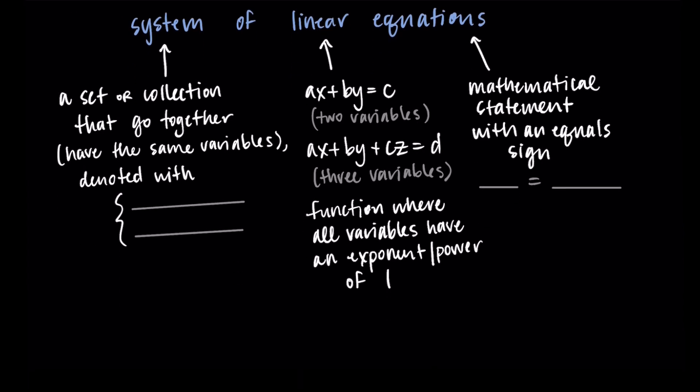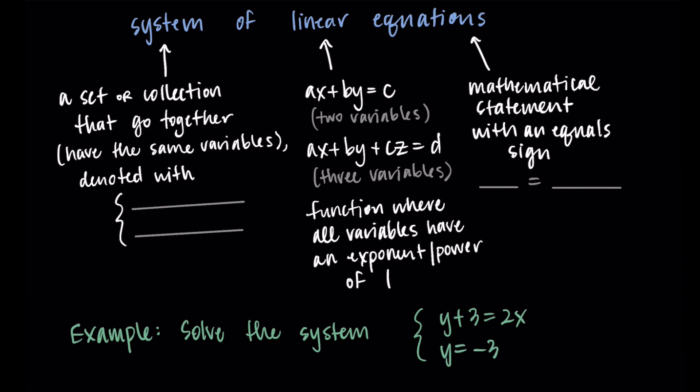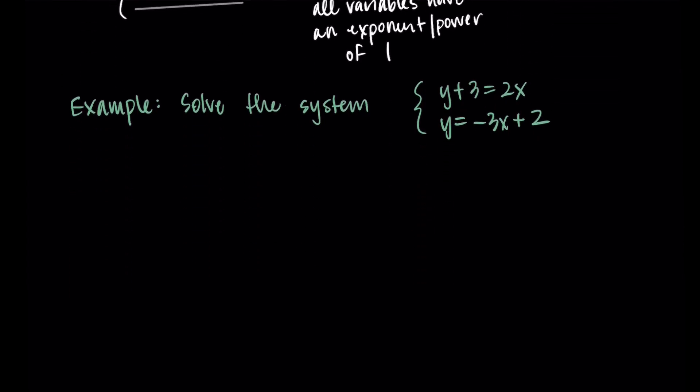That's unpacking what the words mean. But let's look at some examples. I'm going to just stick with a two dimensional and a three dimensional example. Let's say we want to solve the system: Y plus three equals two X, and Y equals negative three X plus two. We have that bracket to denote that this is a system, these two equations go together.